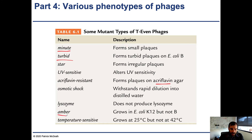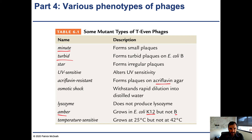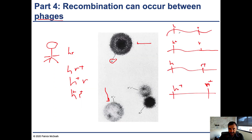Amber is another phenotype — it grows on one type of strain of E. coli but not the other. Amber determines whether or not the phage can infect each of the strains or just one of the strains. There are all sorts of different phenotypes that these plaques can have, and multiple genes control each of these different phenotypes, located throughout the phage genome.